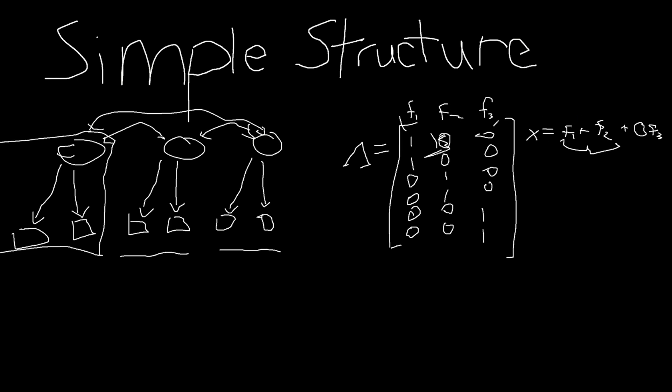And so that's the idea behind simple structure, is to reduce this so that we only have one factor per item. So we can say this item is measuring this aspect of this construct.